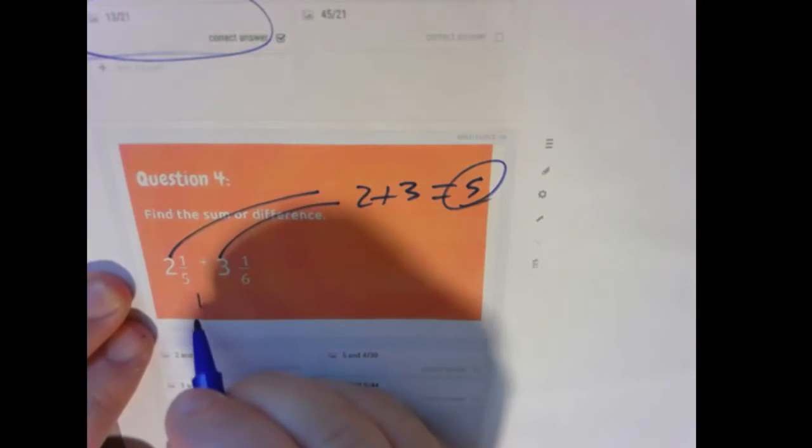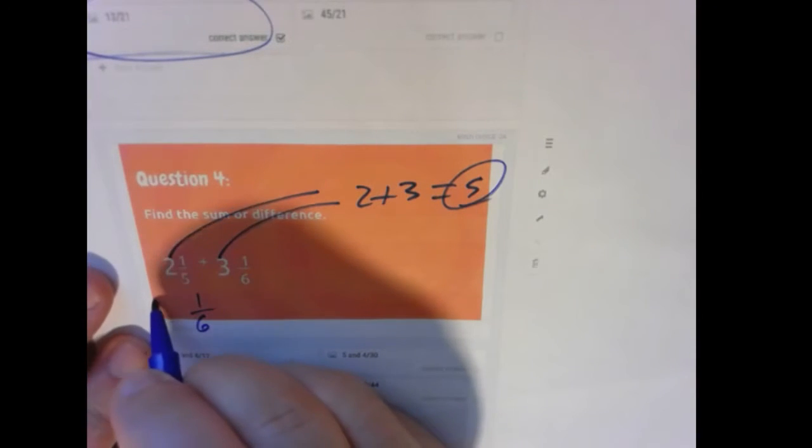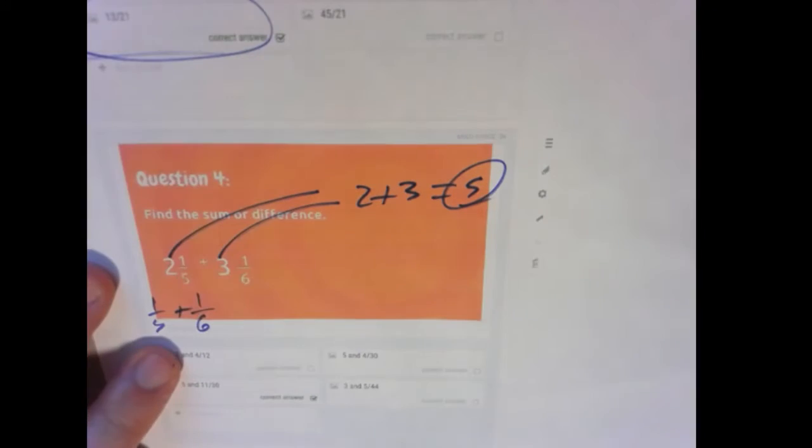Now 1/5 and 1/6, I'll rewrite those. So 1/5 plus 1/6. I'm going to multiply this right side by 5 over 5, the left side by 6 over 6. We get 6 over 30 and 5 over 30.